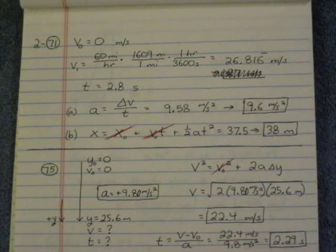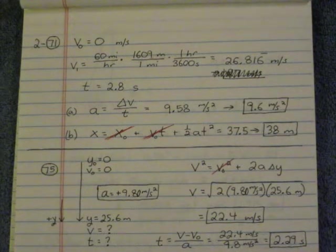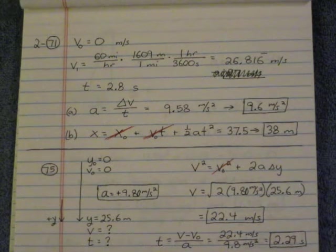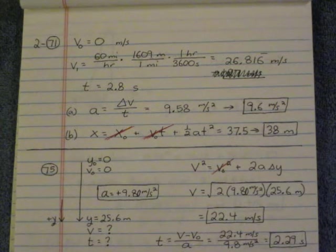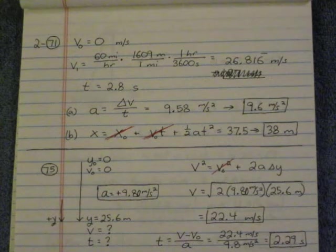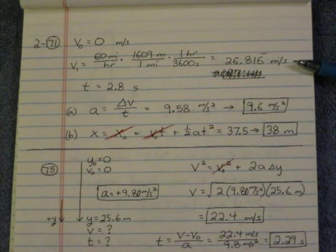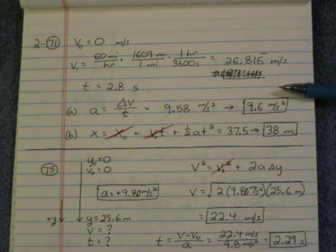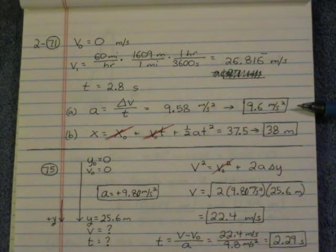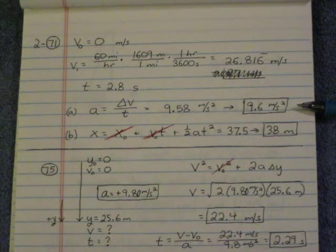Number 71. Rock and roller coaster accelerates in a straight line from rest to 60 miles per hour. What's its constant acceleration, and how far does it travel in the first 2.8 seconds? All right, well, first we need to convert that final velocity. You see my conversion here to 26.816 repeating meters per second in a time of 2.8 seconds. So part A, we just do acceleration is change in velocity over time. And get 9.6 meters per second squared.